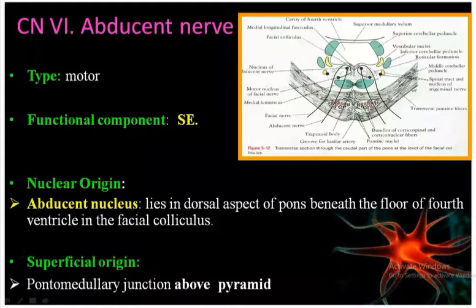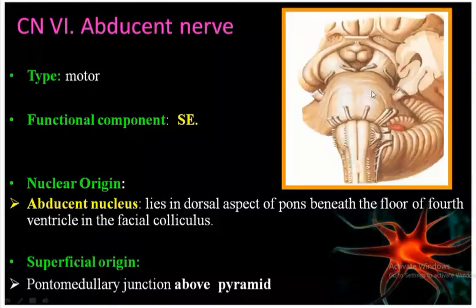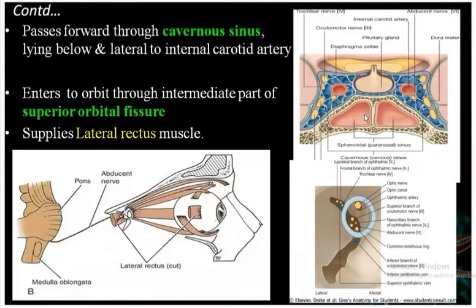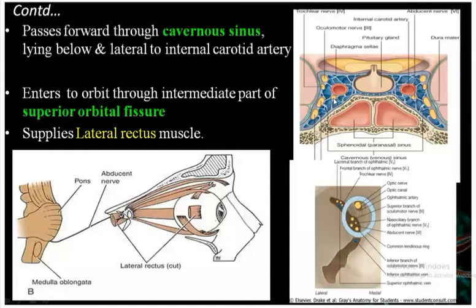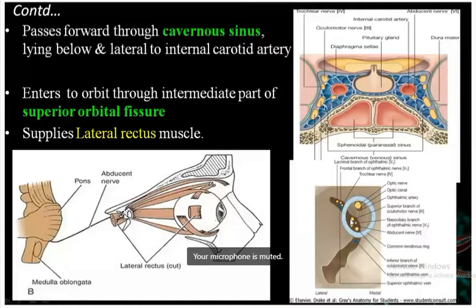The superficial origin of the abducens nerve is at the pontomedullary junction, above the pyramid. Its course: it does not pass through the lateral wall - it is a content of the cavernous sinus along with the internal carotid artery, lying lateral to it. It passes through the cavernous sinus and enters the orbit through the intermediate area of the superior orbital fissure.